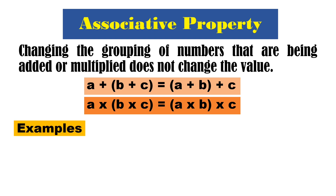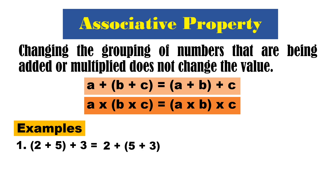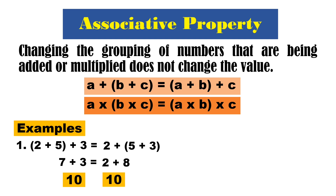Examples: we have the quantity of 2 plus 5 plus 3. Ang nakagroup dito ay 2 plus 5 sa kaliwa, then igroup naman natin 5 plus 3 sa kanan. Tignan natin kung magcha-change yung value. We have 7 plus 3 because 2 plus 5 is 7, and then 5 plus 3 is 8, so that is 2 plus 8. The sum of 7 and 3 is 10, and 2 plus 8 is also 10. Equal! Therefore, changing the grouping of numbers that are being added does not change the value.